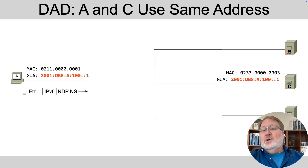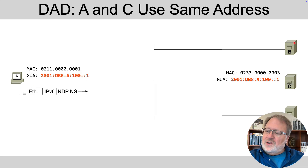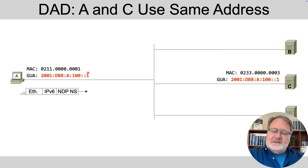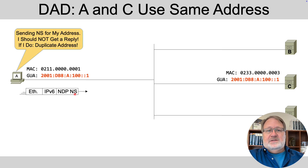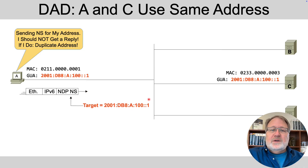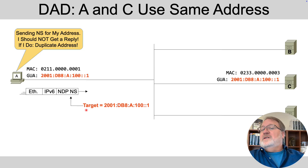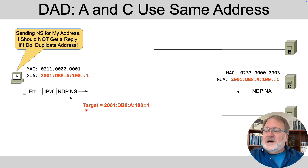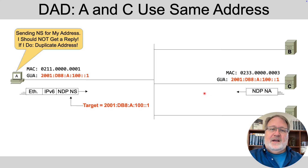I'd also want to know if they understand how DAD works. Using the example from the content video, if A and servers B, C, and D were all on the same link, A would do its duplicate address detection by sending out an NS message, but it would expect to not get a reply. This NS message would have a target of its own IPv6 global unicast address, expecting no one else to be using it — expecting to not get an NA in response. If C was using the same IPv6 address, it would send an NA, notifying A that there's a duplicate address in use.